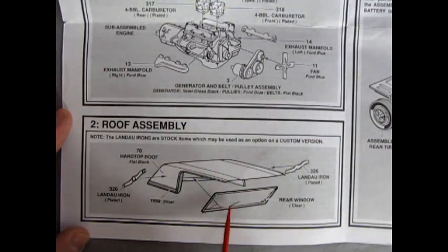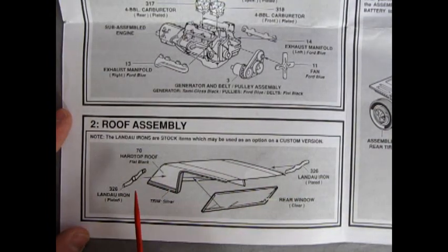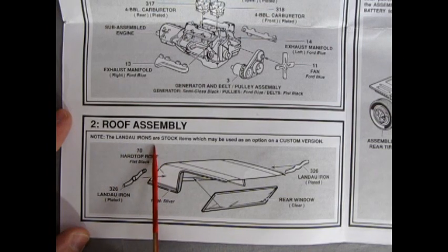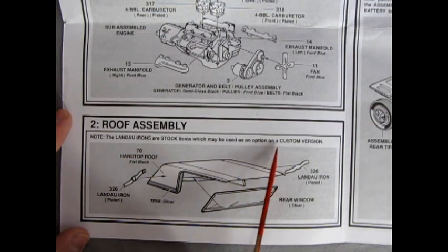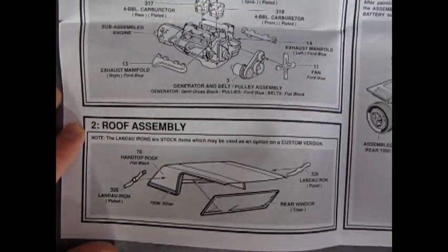Step number two we get into our roof assembly. We have the hardtop roof, the rear window and the two Landau irons. The Landau irons are stock items which may be used as an option on the custom version. There you go.